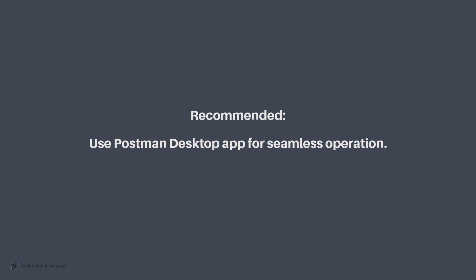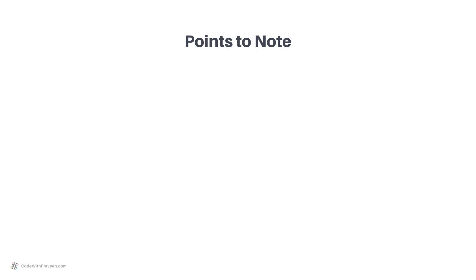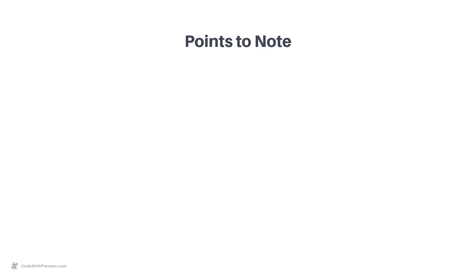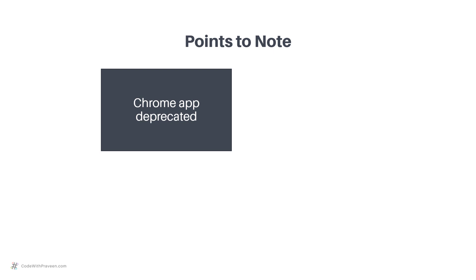Whenever I am going to work with APIs — whether on my local machine, with colleagues, or even at customer premises — the first thing I do is install the desktop app. Moreover, there are some points to keep in mind when working with Postman. First, Postman had a Chrome app some time back, but it has now been deprecated. Hence, if you were using the Chrome app before, it's the right time to switch to the Postman desktop or the web application.